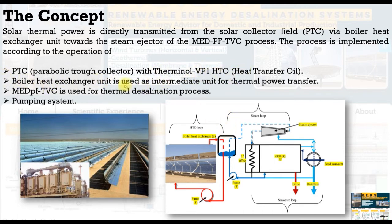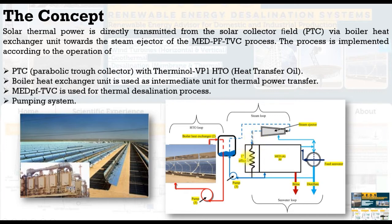A boiler heat exchanger unit is used as an intermediate unit for thermal power transfer or conversion. The steam ejector uses the motive steam to power the MED thermal vapor compression. This is the Parabolic Trough Collector and the heat transfer loop using oil, in order to transfer the thermal power from the solar field to the intermediate boiler heat exchanger unit, which generates steam as motive steam to the steam ejector.